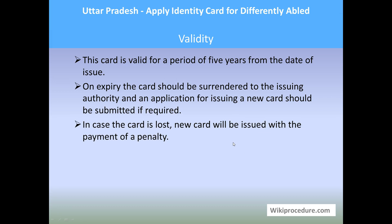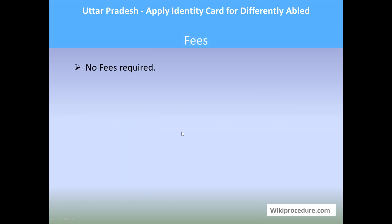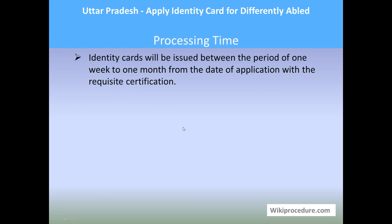Regarding validity: this card is valid for a period of five years from the date of issuance. On expiry, the card should be surrendered to the issuing authority and a new application submitted if required — because if the disability is curable or treatable through medication, the department needs to verify the applicant still falls in the same category. In case the card is lost, a new card will be issued with the payment of a penalty as advised.